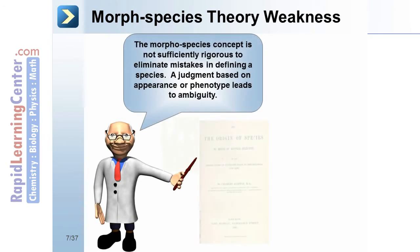The morphospecies concept is not sufficiently rigorous to eliminate mistakes in defining a species. A judgment based on appearance or phenotype leads to ambiguity.